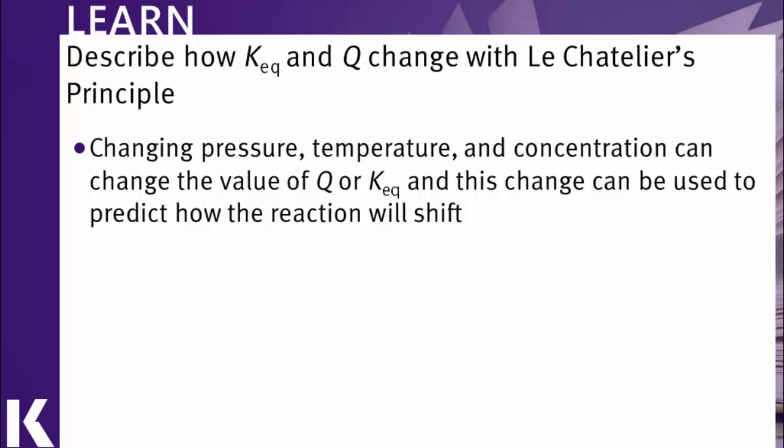Q, or the reaction quotient, is also a ratio of products to reactants, but it's the ratio of products to reactants at any particular time in a reaction. So we can think of this as where the reaction is at any point in time.